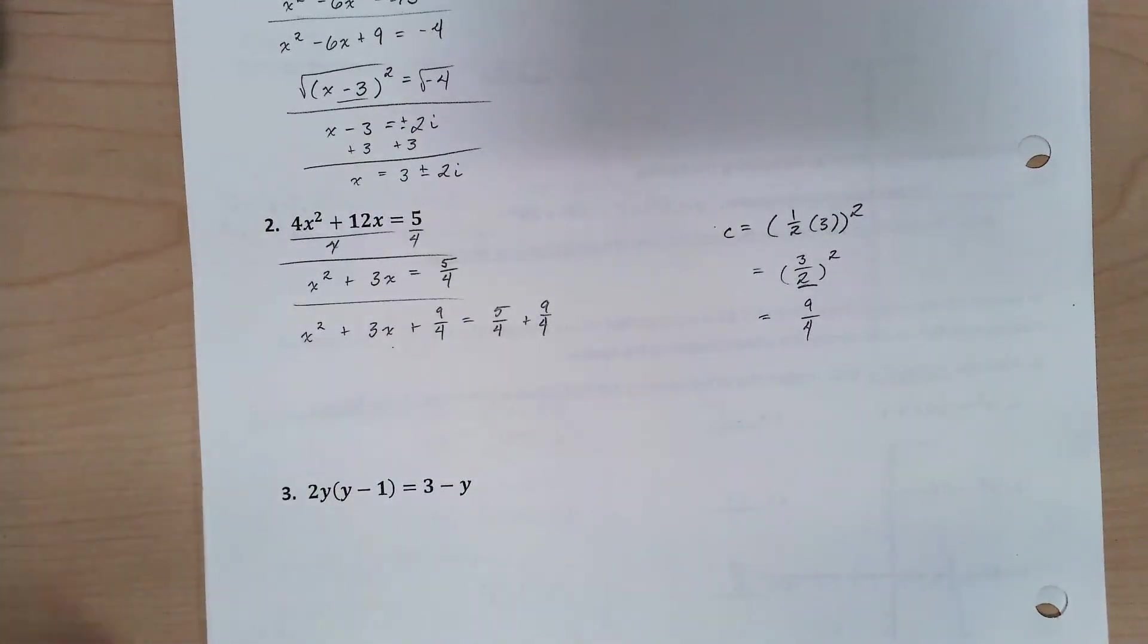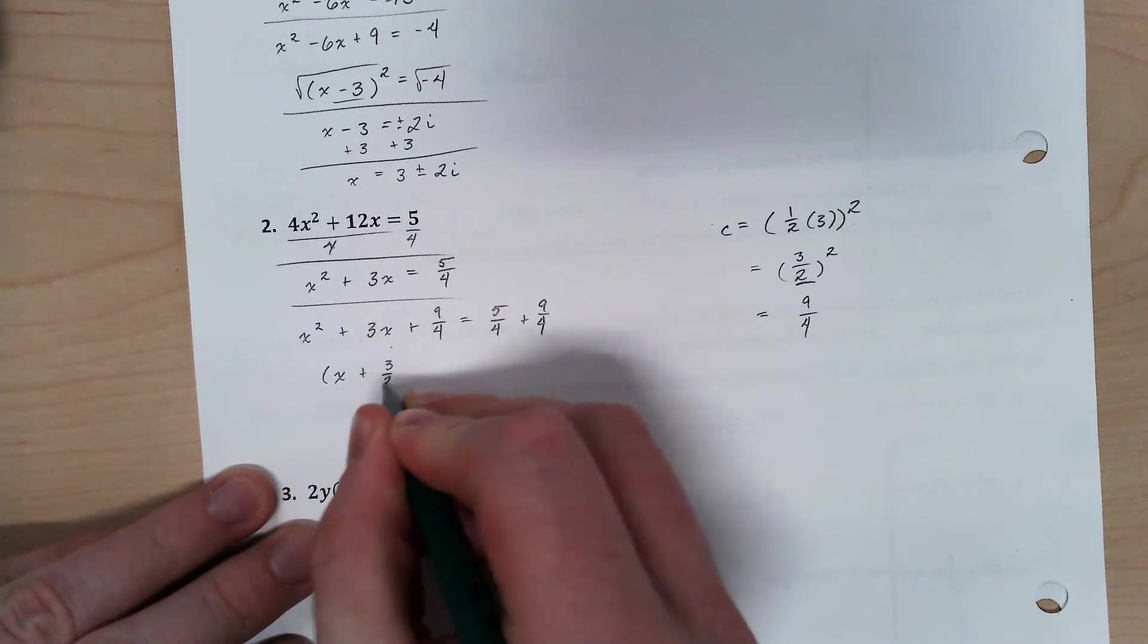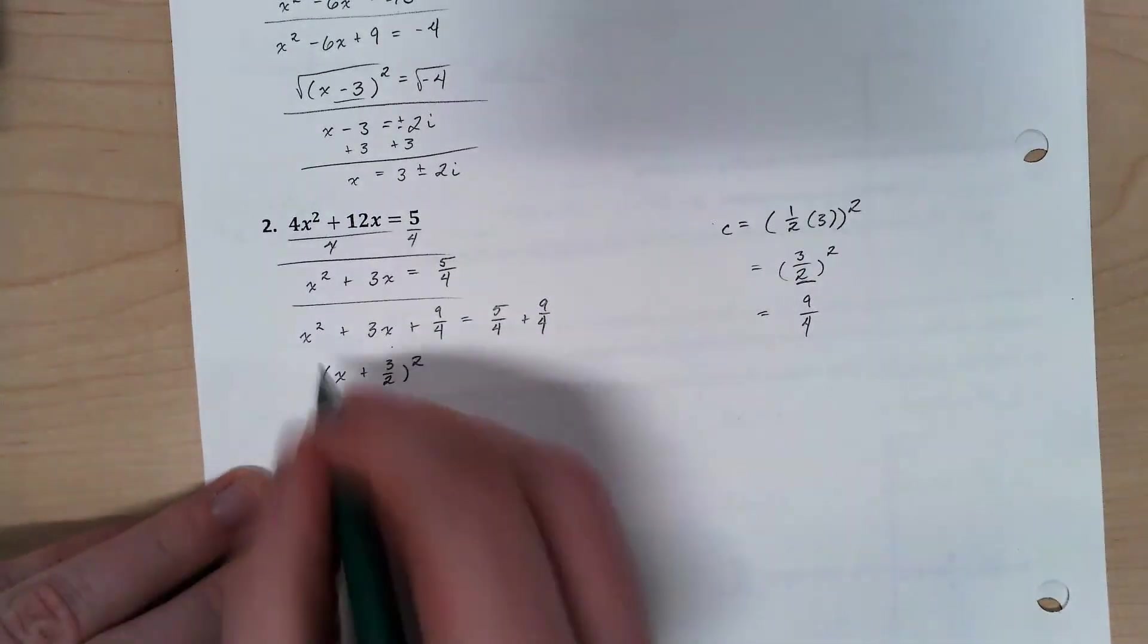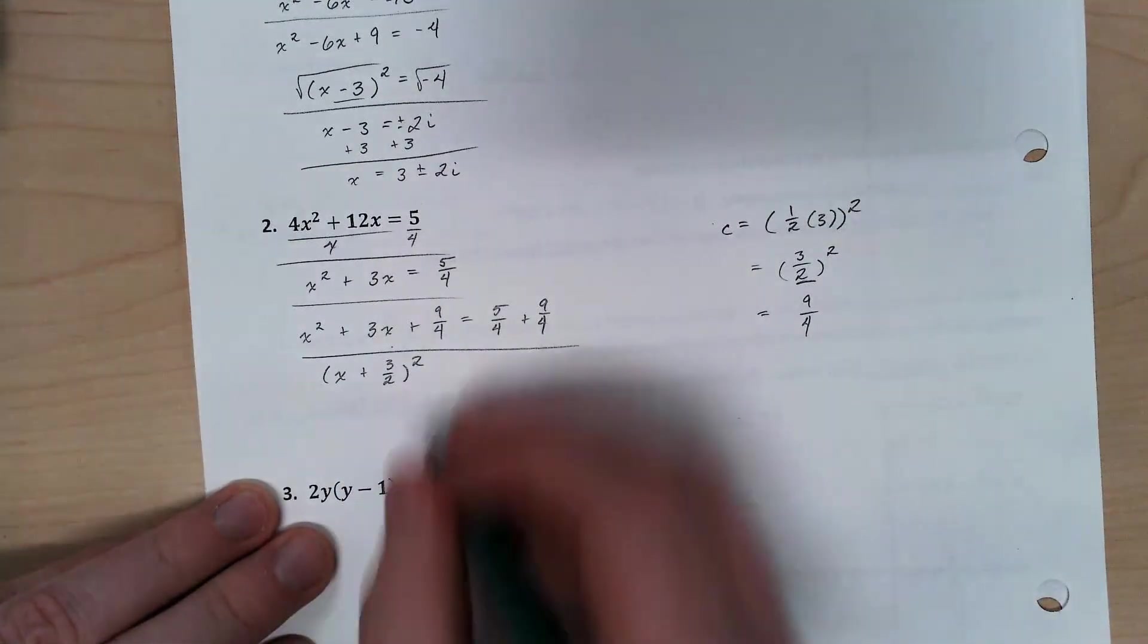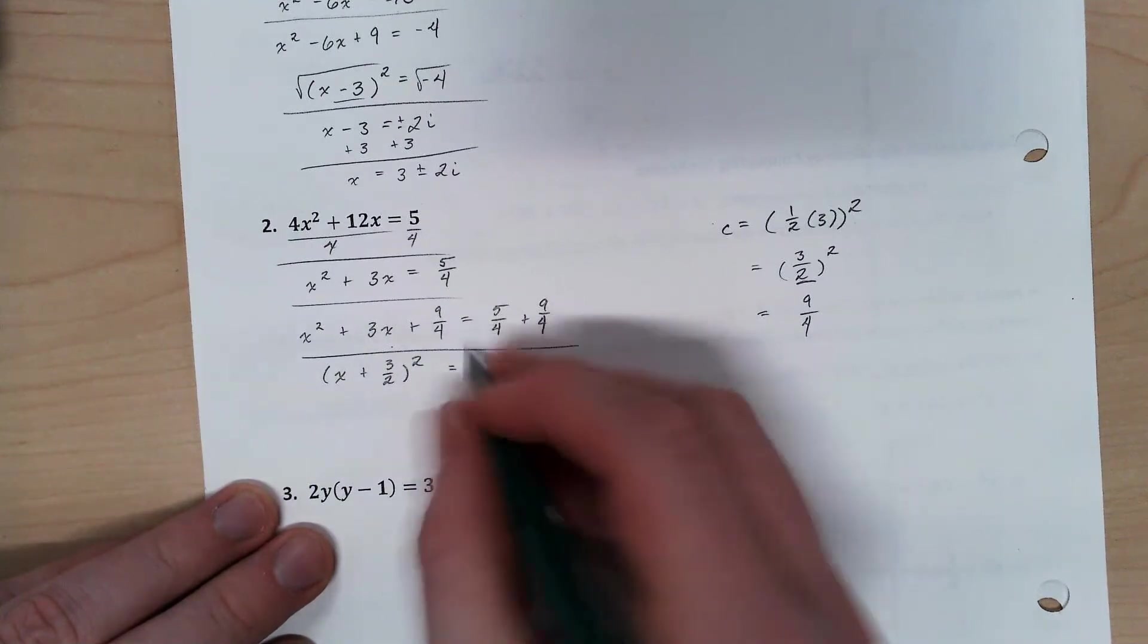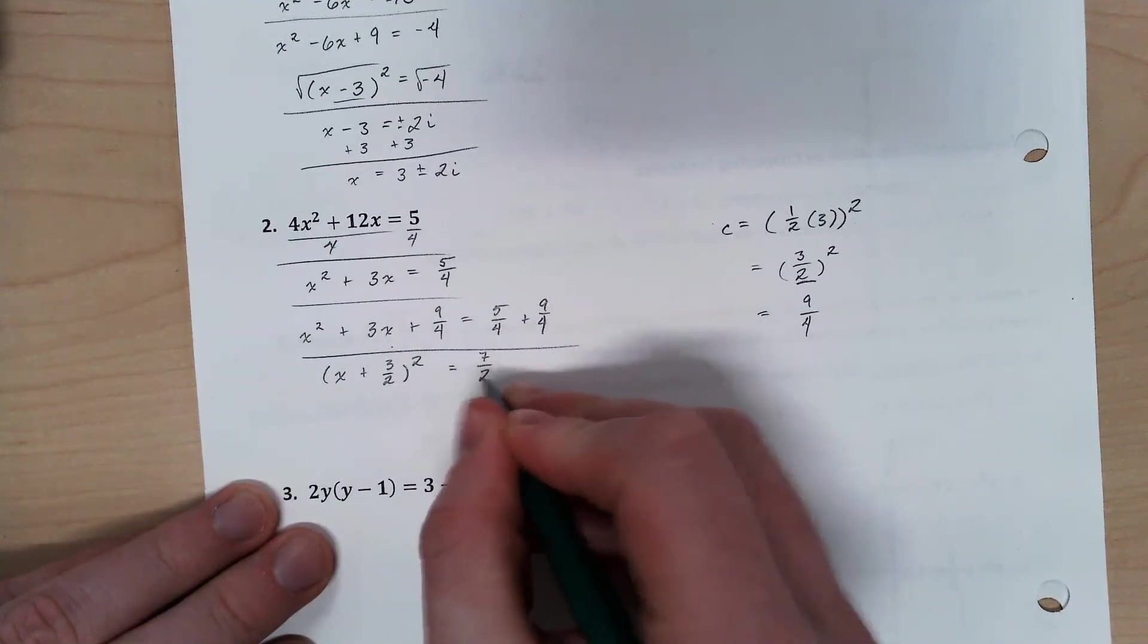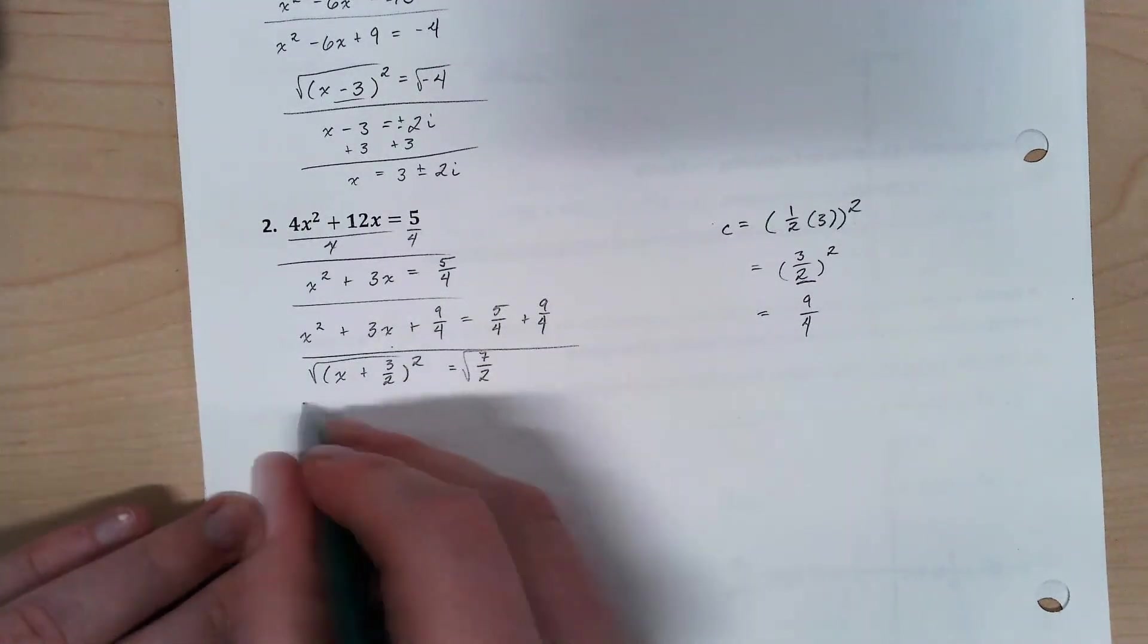It's positive 3 over 2. So this factors to x plus 3 over 2 squared. Every time, that is going to be this value. And so on the right, I've got 14 over 4, which simplifies to 7 over 2. And we're ready for our square root property.